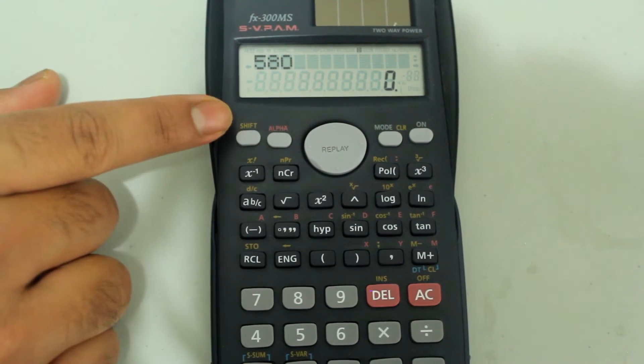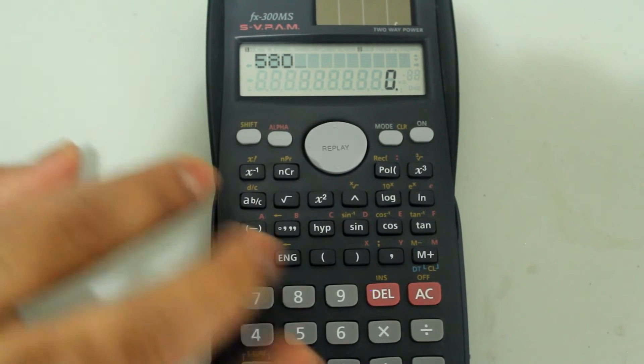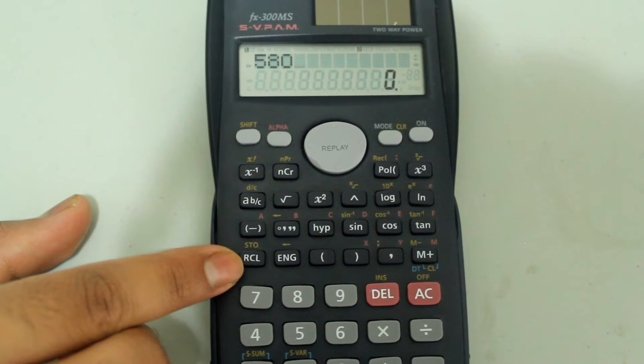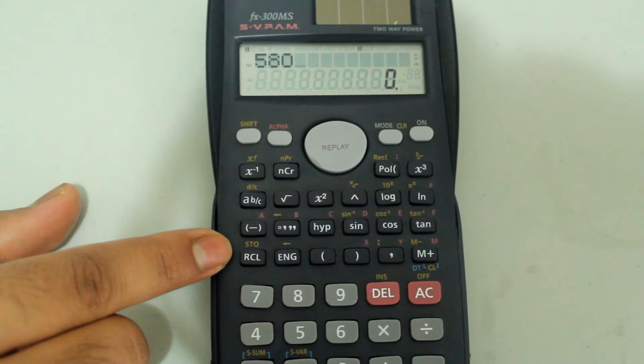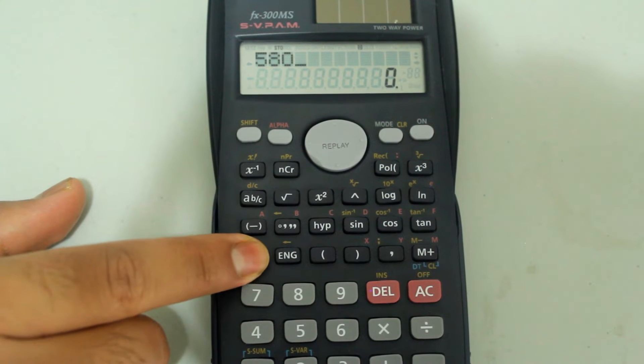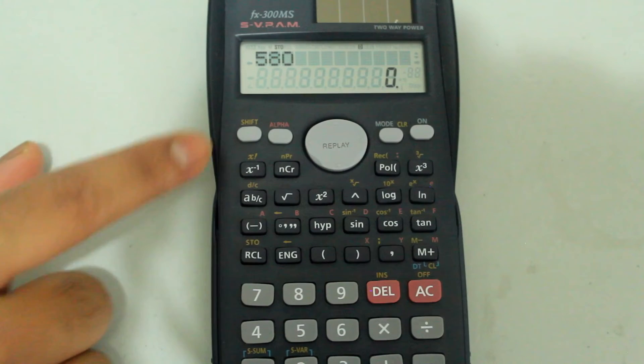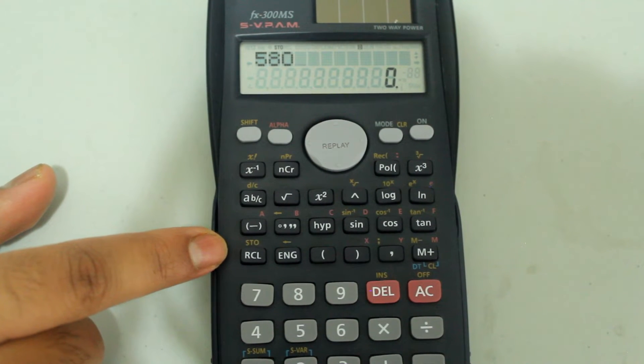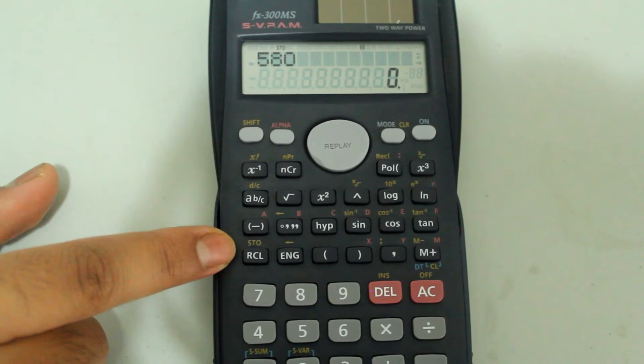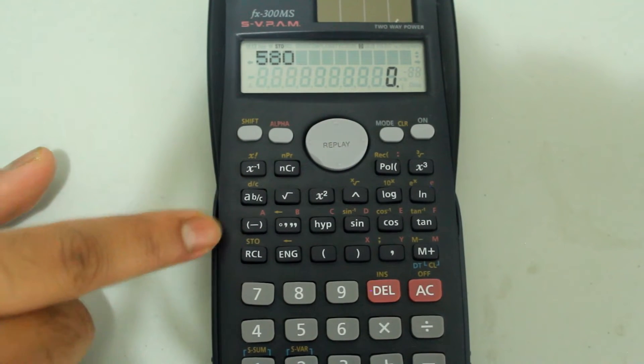Now press shift and press the RCL recall button to select the store feature. By hitting shift first, we're selecting the feature that's in the yellow color.